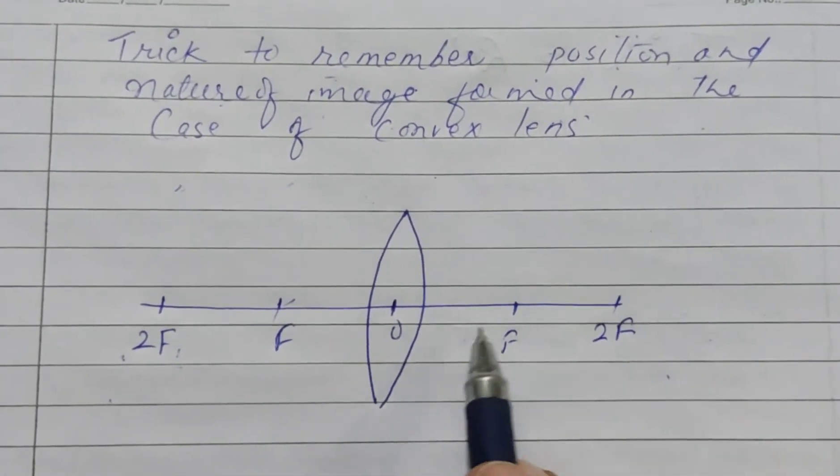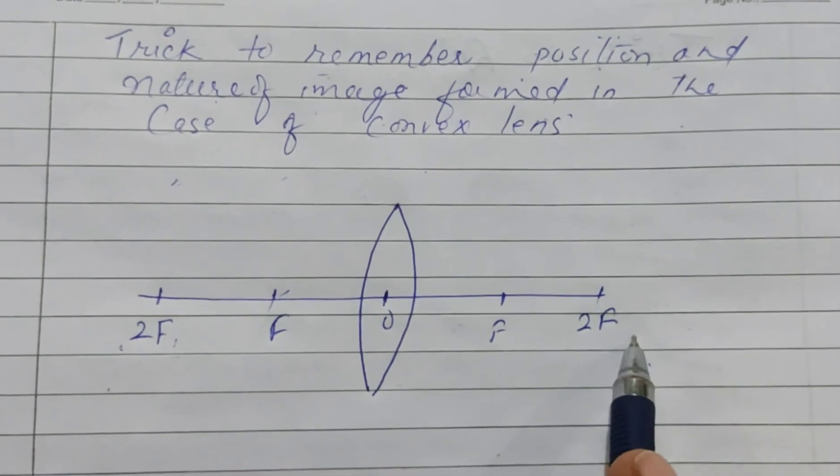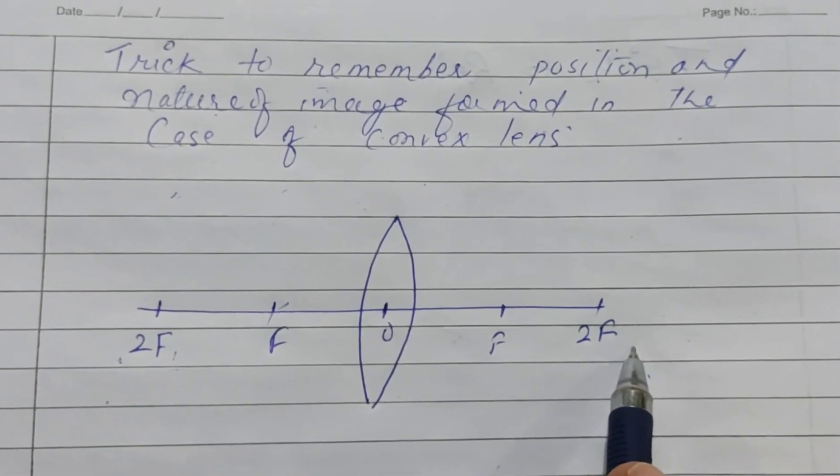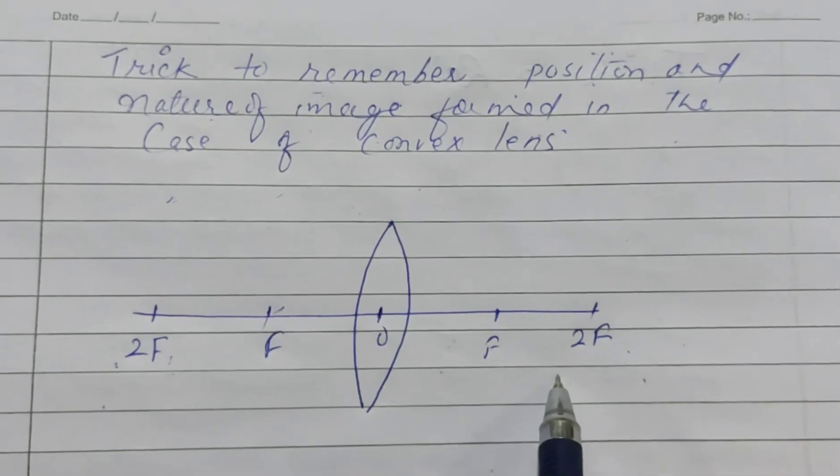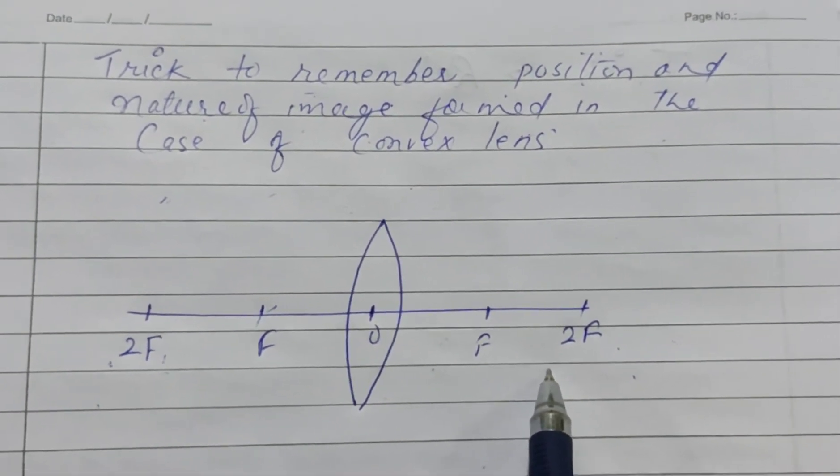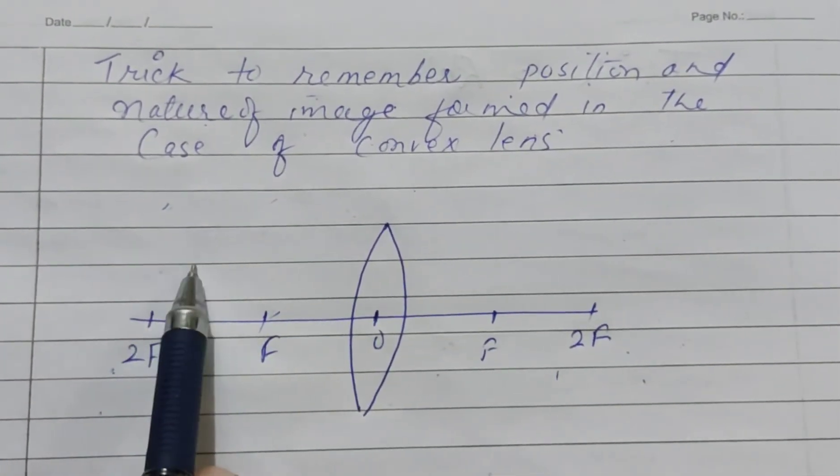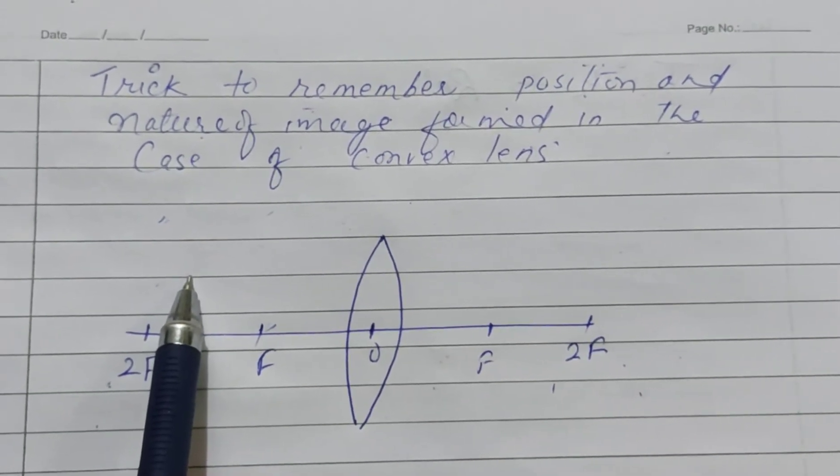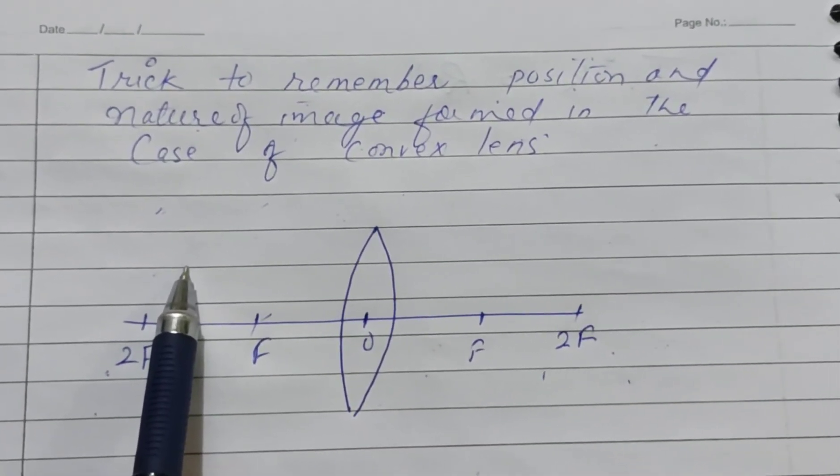Most images are formed towards this side and they are real and inverted type. Only one image is formed towards left side of the lens and that is totally different—that is virtual and erect.